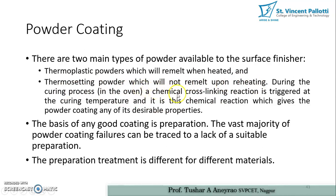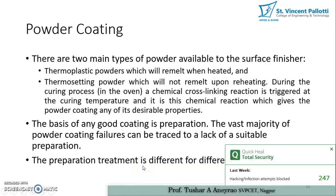During the curing process, a chemical cross-linking reaction is triggered at the curing temperature, and it is this chemical reaction that gives the powder coating its desirable properties. The vast majority of powder coating failures can be traced to a lack of suitable preparation. The preparation treatment is different for different materials — whether we are performing powder coating on mild steel, cast iron, or copper, the surface treatment will be different accordingly.